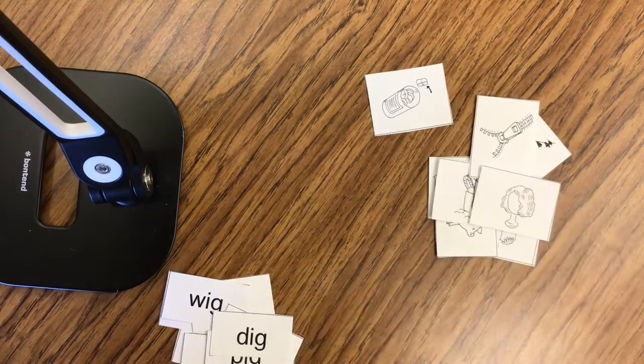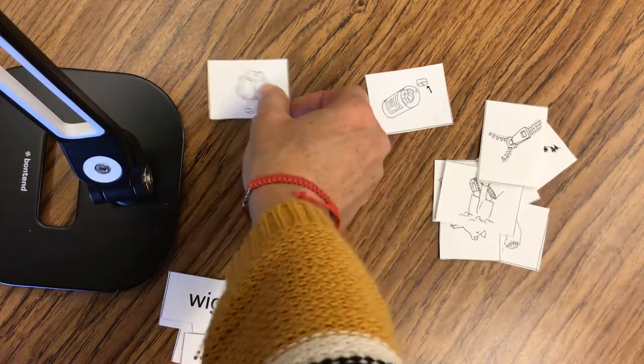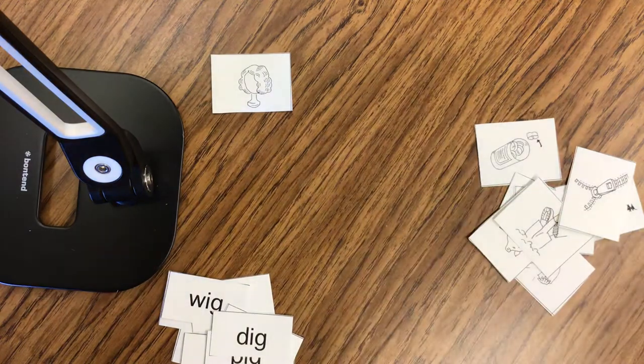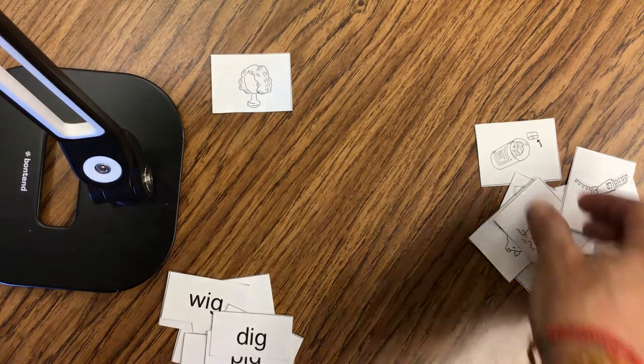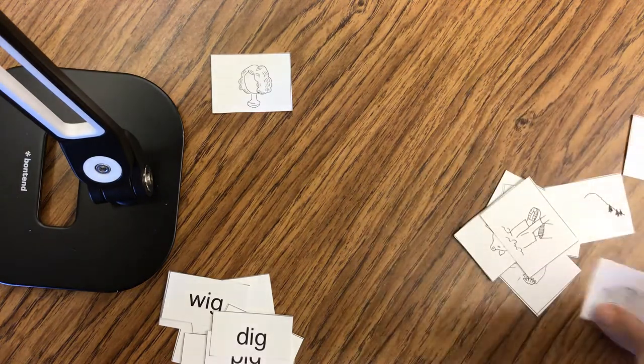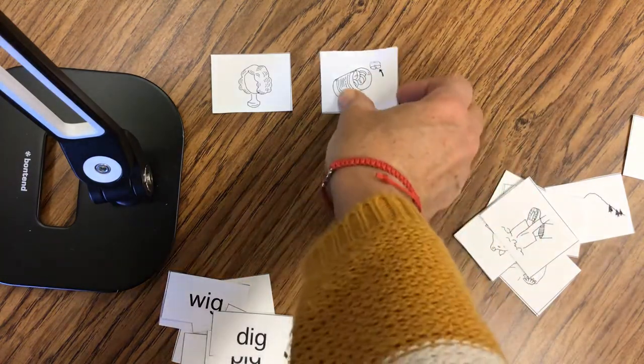We are going to put three different headers out. Our first header will be the wig, if you can find the wig and put that at the top, because we're going to put words that rhyme with wig there. And the next one that I would like at the top is pill. You can put the pill at the top.